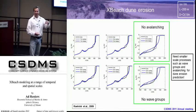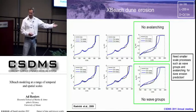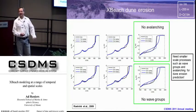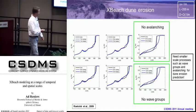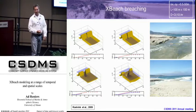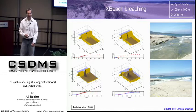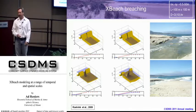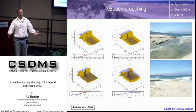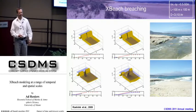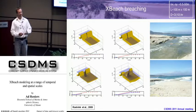That also meant that we needed to include smaller spatial and time scales to get something that is occurring at a larger time scale. Another example is breaching. This is based on an experiment that was done by Paul Visser, where they went into the field. They built a dike of about 250 meters long and had an initial cut into it — not very big, but at least that it started to flow.